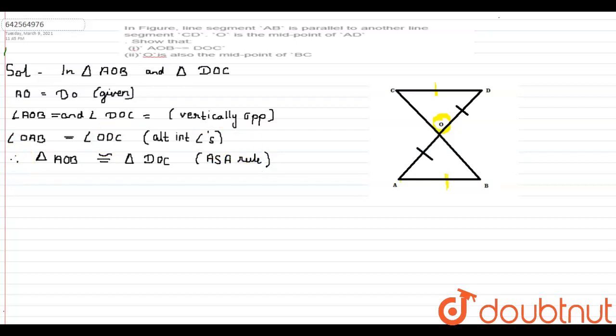So here we prove the first part, that triangle AOB is congruent to triangle DOC. Now we need to prove that O is also the midpoint of BC.